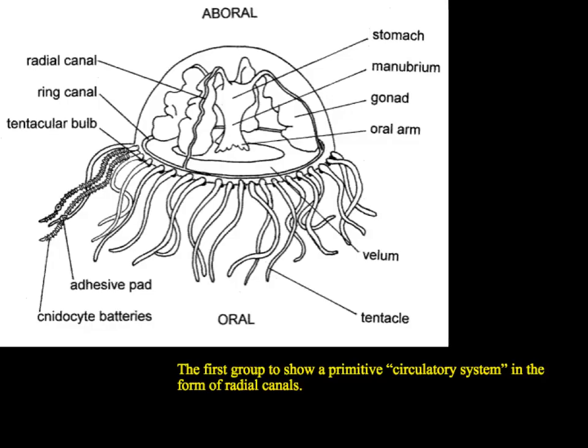It's also the first group to show a primitive circulatory system. You can see here there are radial canals and also ring canals — both of those are parts of this primitive circulatory system. It doesn't have a heart, it doesn't have arteries or veins, but it does have these radial canals that circulate fluids around the body.